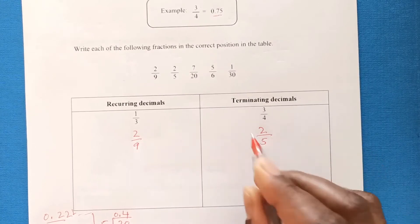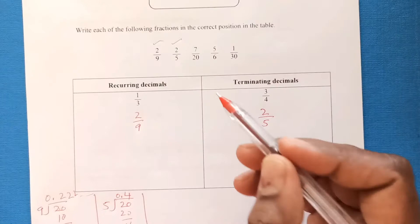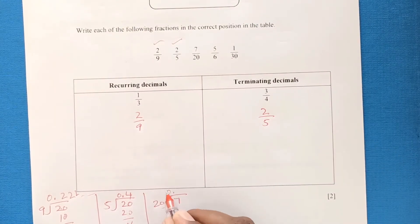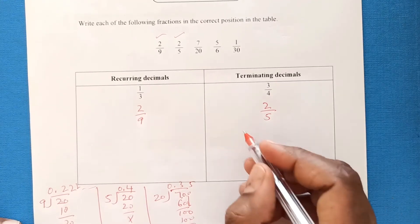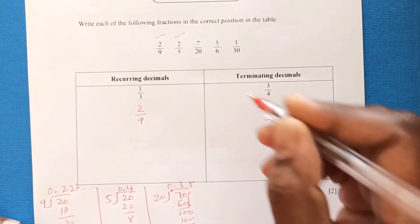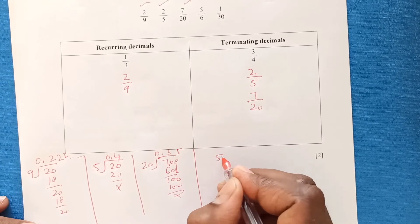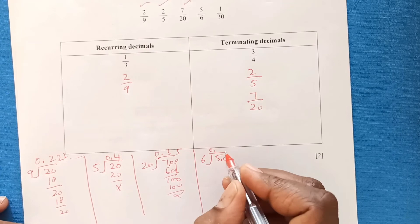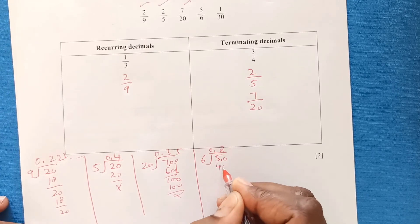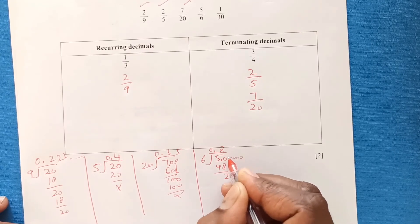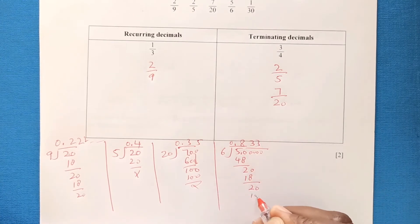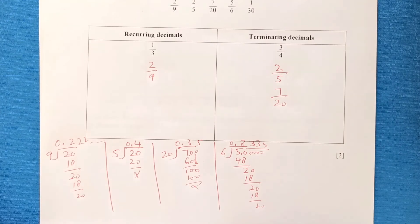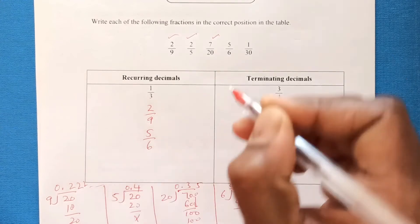For 7/20: dividing gives 0.35, which has a definite end, so it goes under terminating decimals. For 5/6: dividing gives 0.8333... — every time we get remainder 2 so it continues, making it a recurring decimal. So 5/6 goes under recurring decimals.